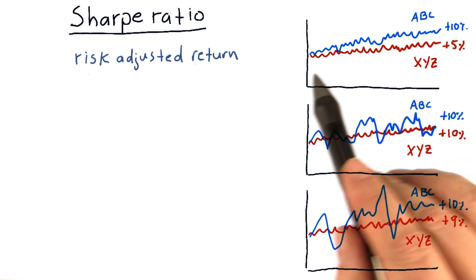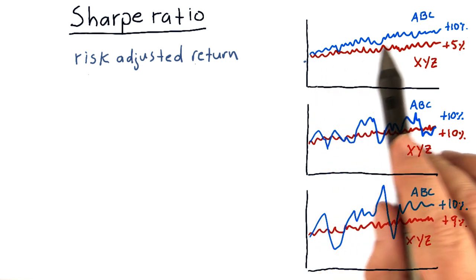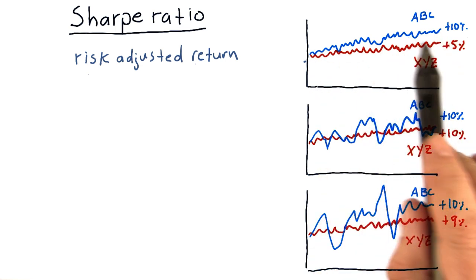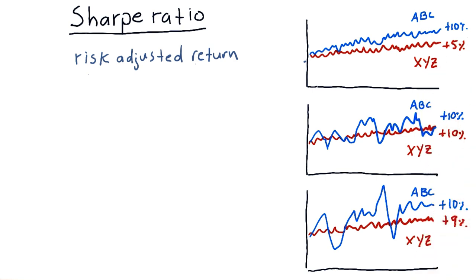So Sharpe ratio will show us, for instance, that in this case ABC is better because it has about the same volatility as XYZ but higher return.